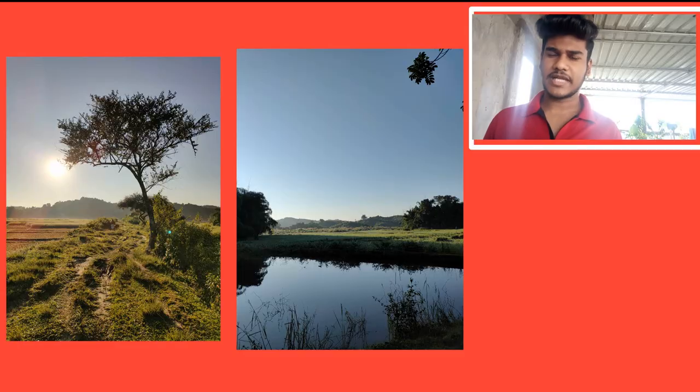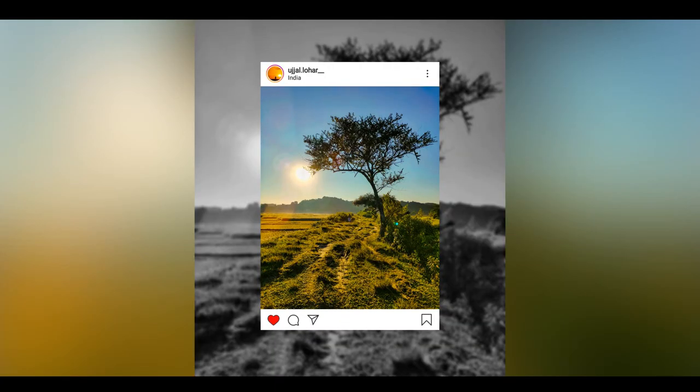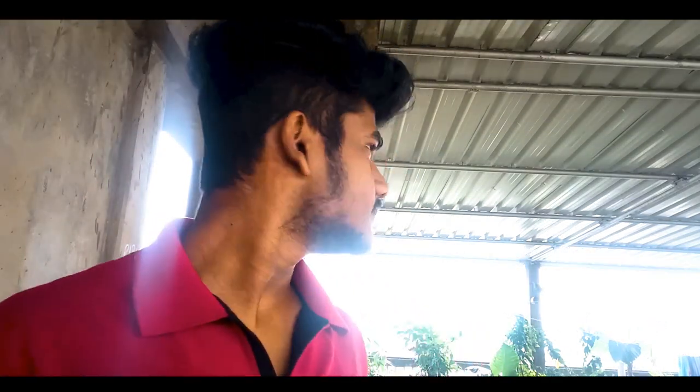The first entry was from Ujjal. He is a very good photographer — he sent three landscape photos, and from those three I selected only two. You can see them on the screen. I have edited all these pictures in Lightroom, Snapseed, and Lens Distortion app. Here is the result of the first edited photo.